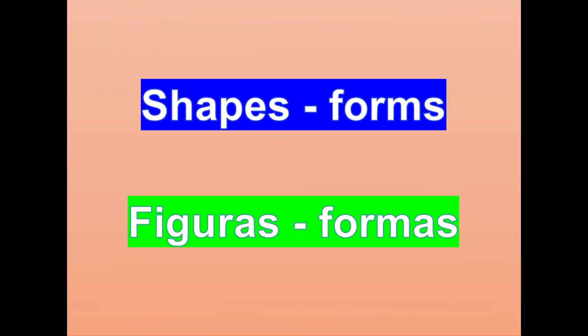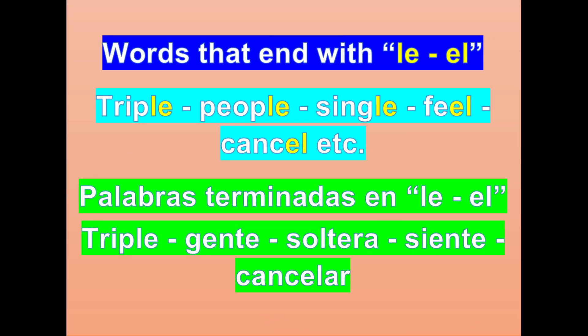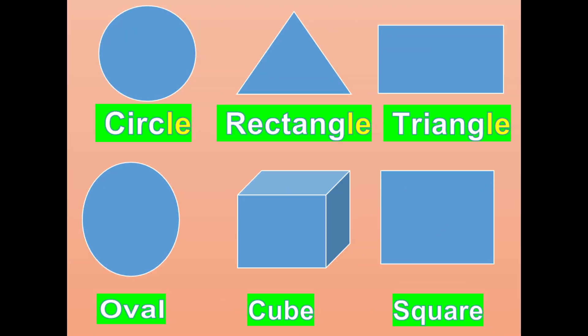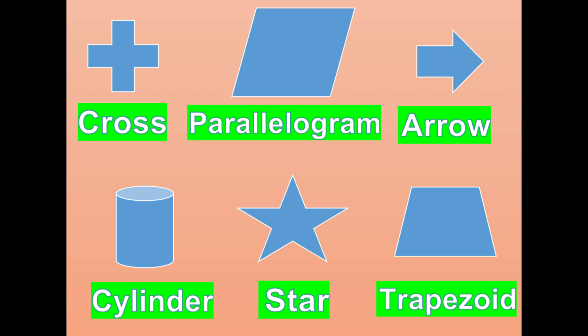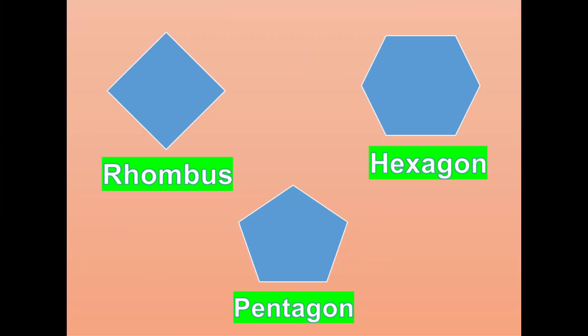Shapes or forms. Estas son algunas figuras que debemos pronunciar de una buena manera. Recuerden que en inglés es difícil mantener una regla, pero la mayoría de las palabras terminadas en L-E o E-L generan un sonido 'all'. Por ejemplo: triple, people, single, feel, cancel, etc. Circle, rectangle, oval, square, cross, parallelogram, arrow, cylinder, star, trapezoid, rhombus, pentagon, hexagon.